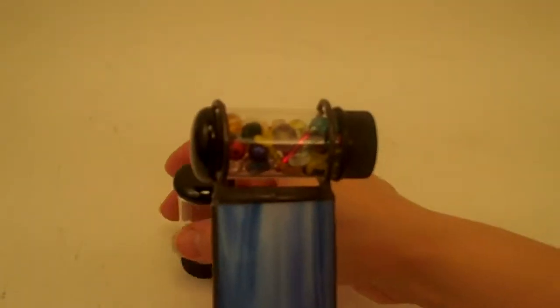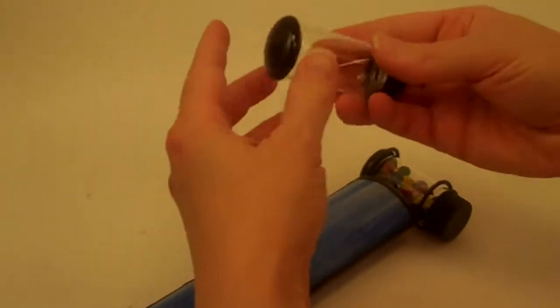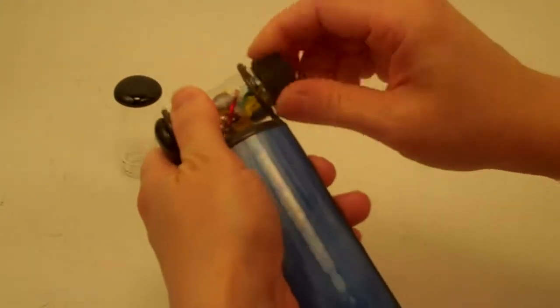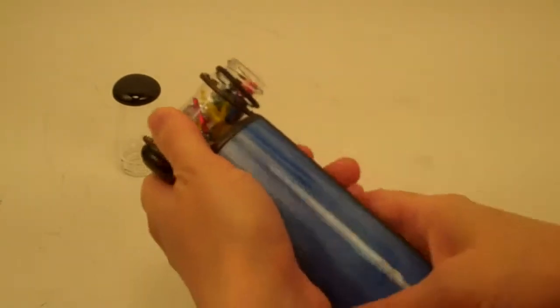Now how the kaleidoscope works is that it is interchangeable, and it does come with an extra vial. So you can unscrew the bottom of the tube, and I'm going to grasp this here.